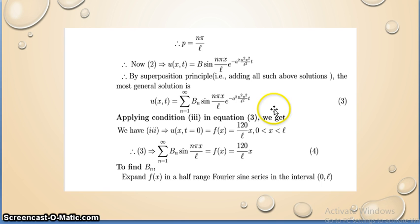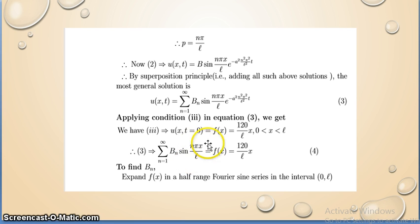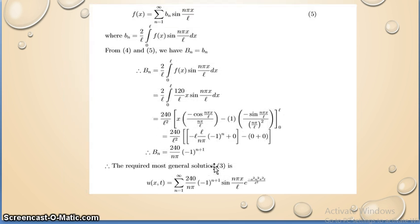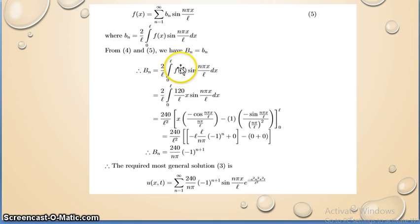Applying boundary condition 3, put t = 0 (so e⁰ = 1): Σ(n=1 to ∞) Bₙ·sin(nπx/L) = f(x) = 120x/L. To find Bₙ using the Fourier sine series: Bₙ = (2/L)∫₀ᴸ f(x)·sin(nπx/L) dx. Substituting f(x) = 120x/L: Bₙ = (2/L)∫₀ᴸ (120x/L)·sin(nπx/L) dx.